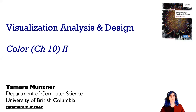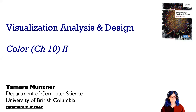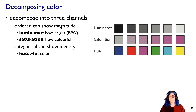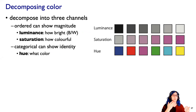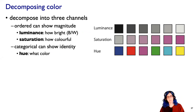Let's continue talking about visualization analysis and design through color. In the previous segment about color, we talked about this core idea that we decomposed the monolithic idea of color into three channels: the magnitude channels of luminance and saturation, good for ordered data, and the identity channel of hue, good for categorical data.